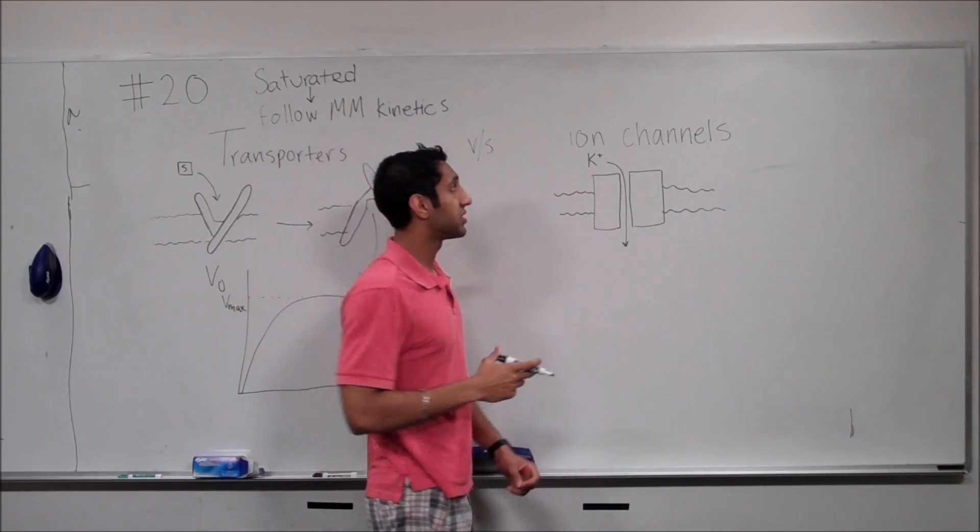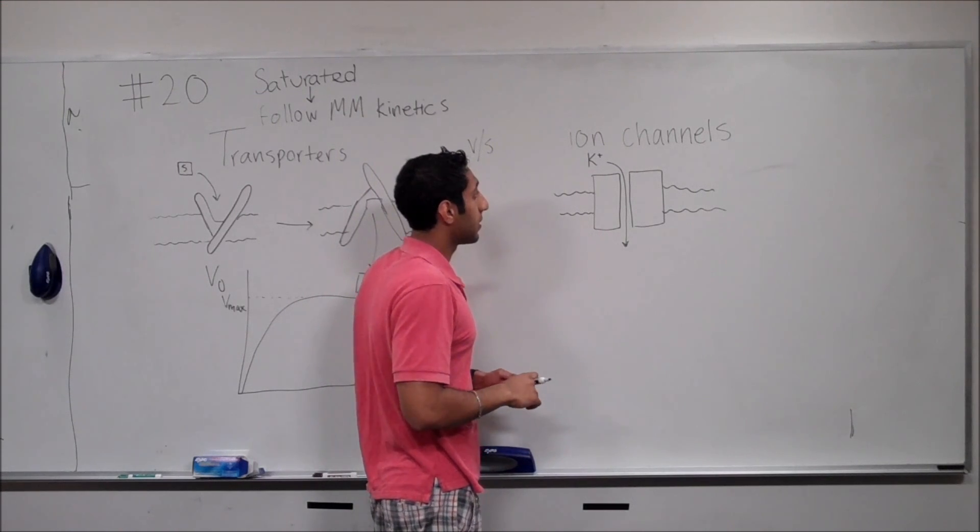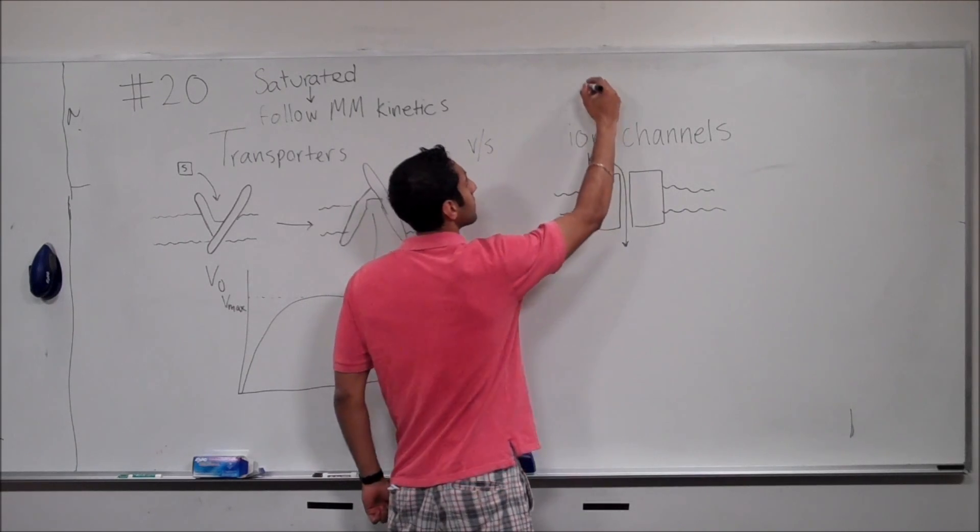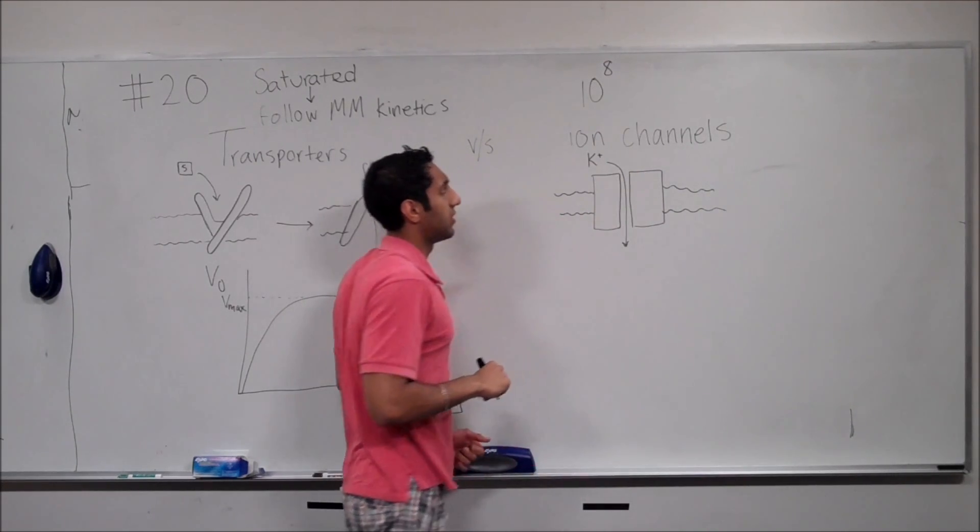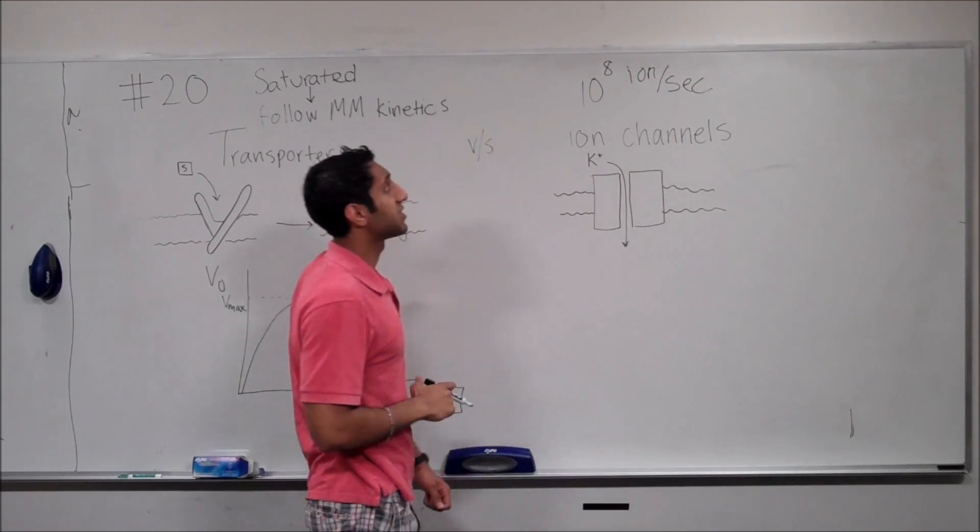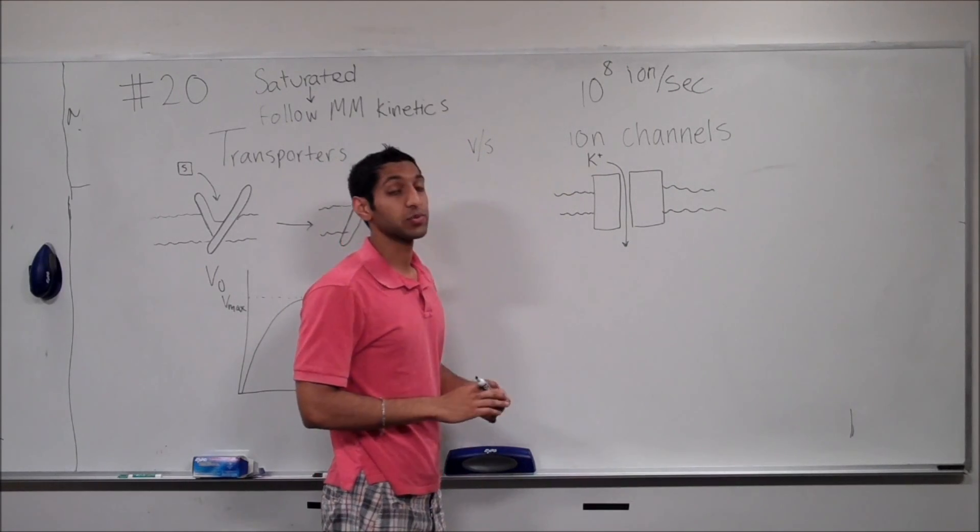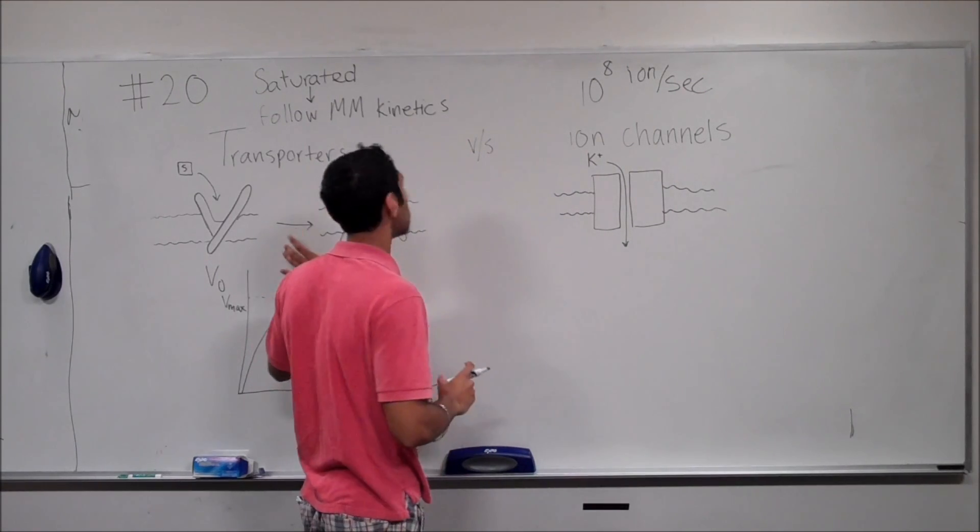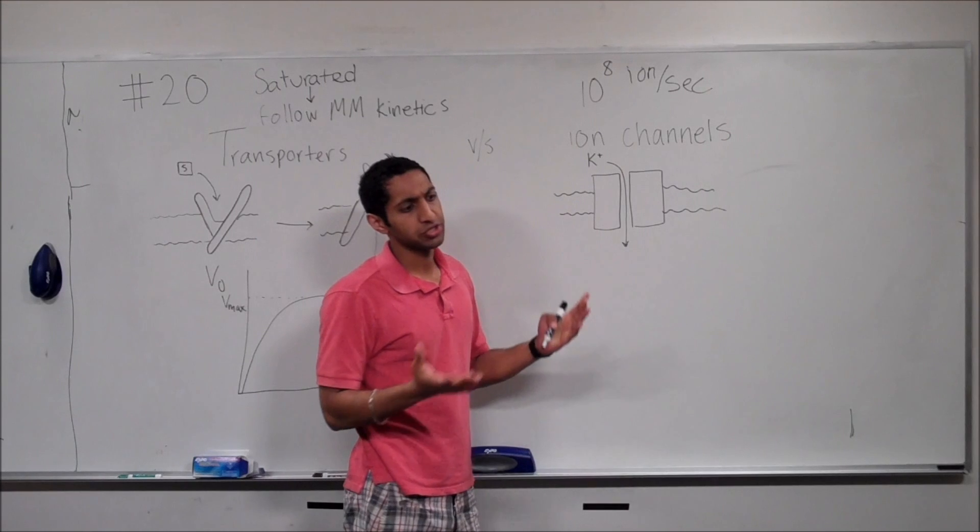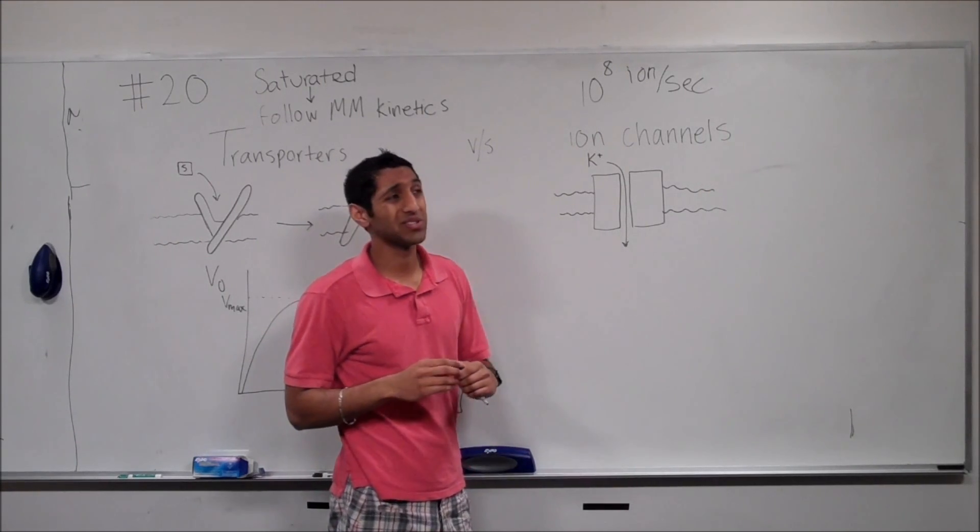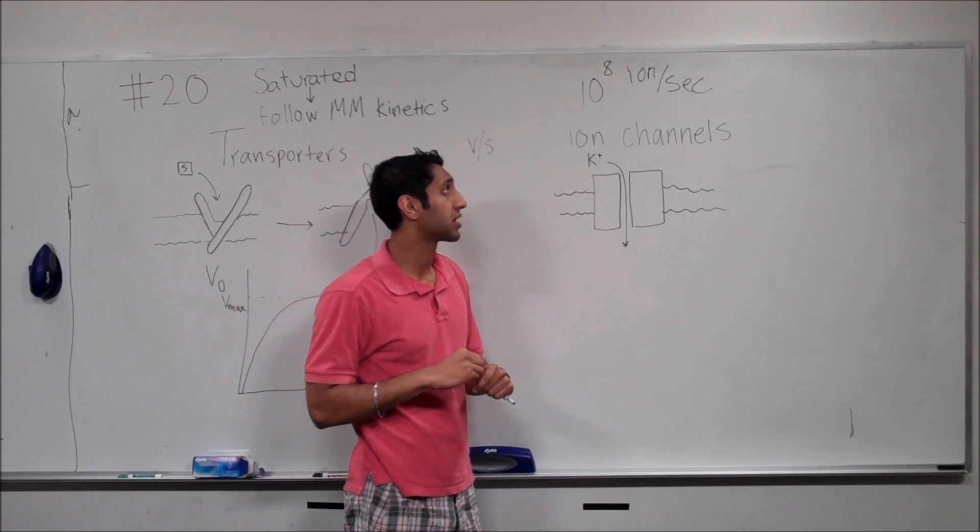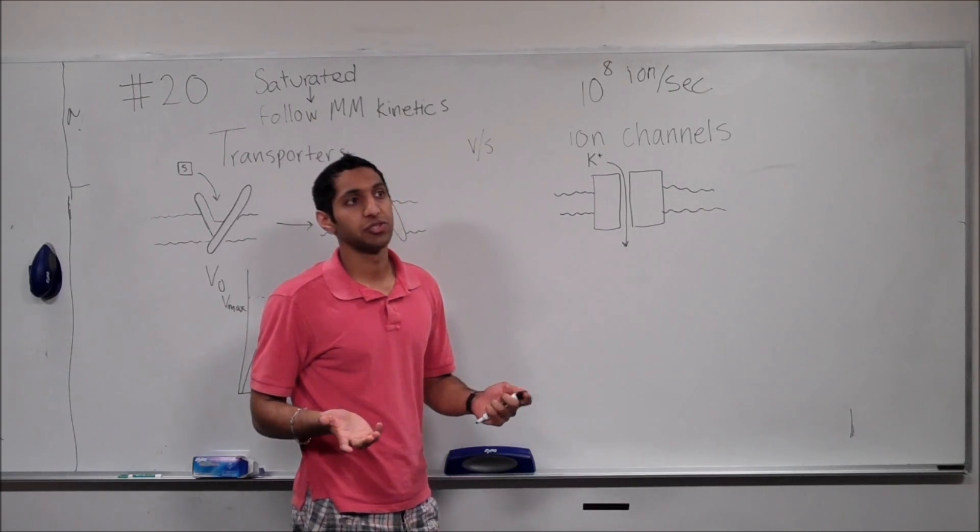Ion channels, on the other hand, don't necessarily have that issue. And, for example, the potassium channels, they can transport potassium ions from 10 to the 8th ions per second. That's really fast compared to transporters. And you generally should see ion channels in places or in cells that require a fine balance of salt concentrations or ion concentrations. An example of this is neurons.